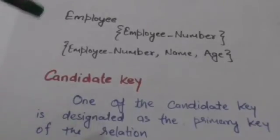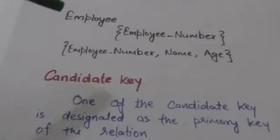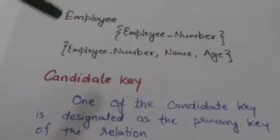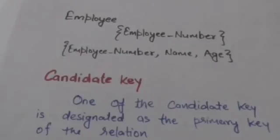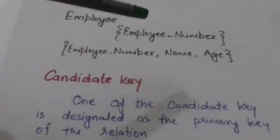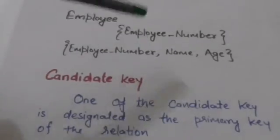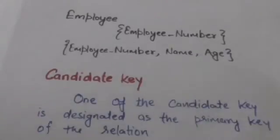But it is not a key, because if we remove attributes name and age from this attribute set, then it will still remain a super key. This shows the redundancy in this super key.